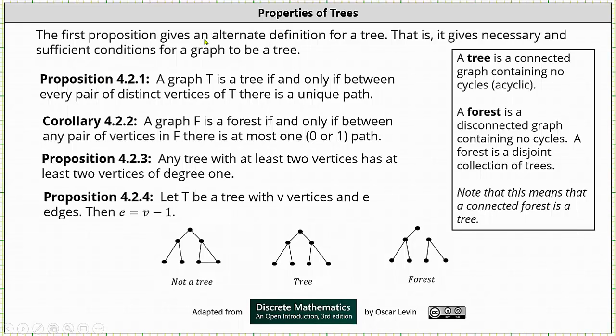The first proposition gives an alternate definition for a tree. And the proposition is, a graph T is a tree if and only if between every pair of distinct vertices of T there is a unique path.